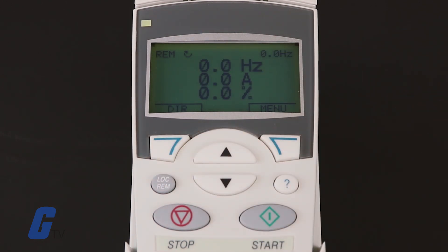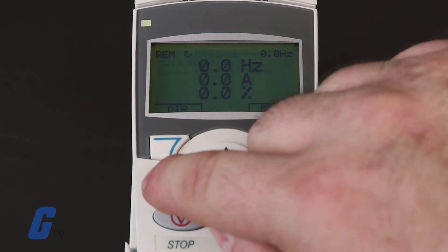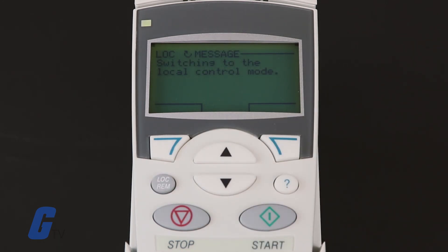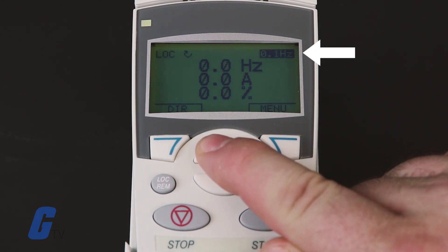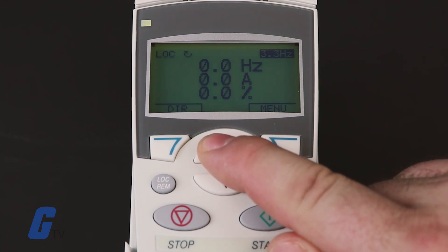Before finishing, you should check the direction of the motor rotation. If the drive is in remote control mode, switch it to local mode using the lock REM key. If you are not in the output mode, you may need to press the exit button more than once to get there. Use the up arrow to increase the frequency reference from zero to a small value for testing purposes.